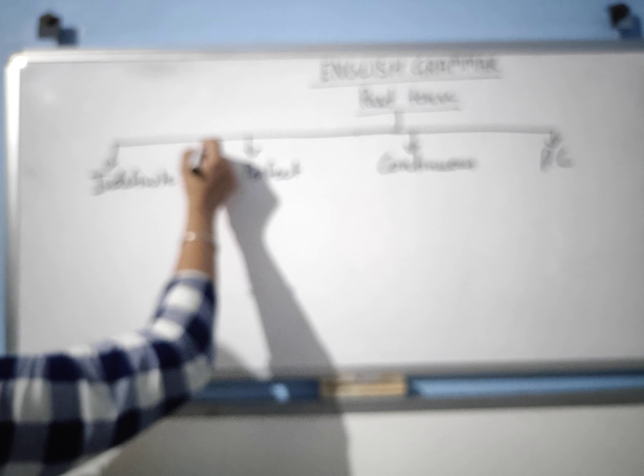We will learn about them one by one. First, I will tell you the structure of past indefinite: subject plus verb second form plus object.